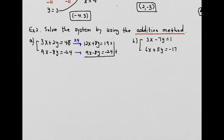Adding the equations: 12x + 9x = 21x, and the y terms cancel. Then 192 − 24 = 168, giving 21x = 168. Dividing both sides by 21, I get x = 8. That's the addition method. Once you have x, you could use substitution to find y, but I'll use the addition method again.